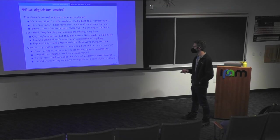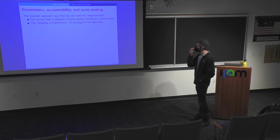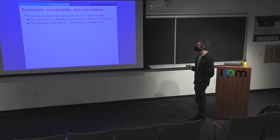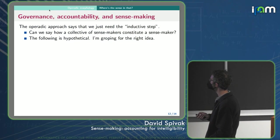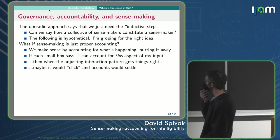So that's the kind of account that you could tell in the story in this accounting system that I don't have yet. So the operatic approach says we just need this kind of inductive step. We need to know how a collective of sense makers constitutes a sense maker.